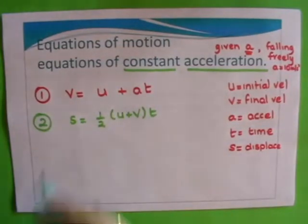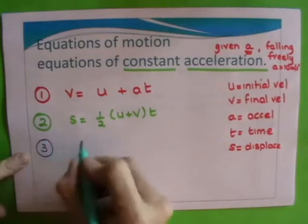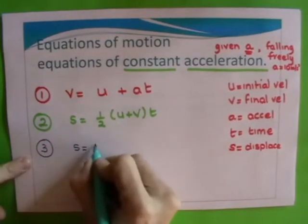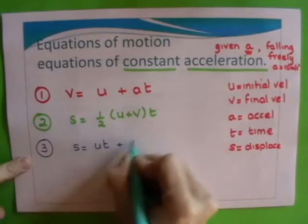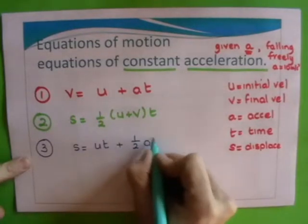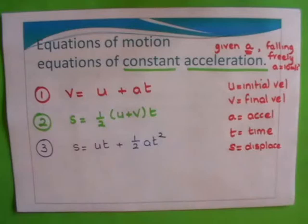Your third equation is s equals ut plus a half at squared.